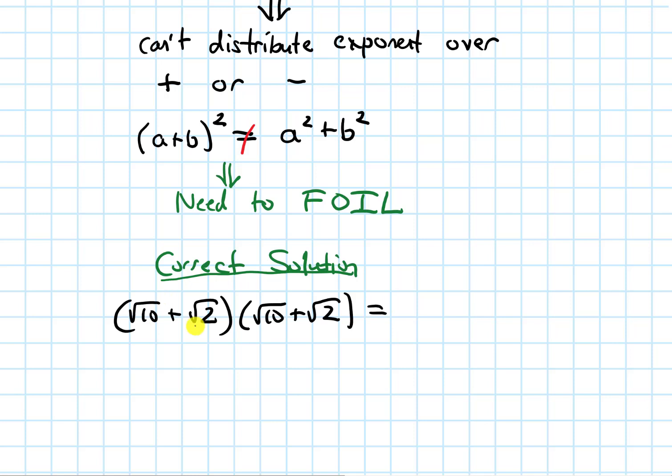When we do that, we'll get root 10 times the root 10, so root 10 squared. We'll also have to multiply that by this root 2, and then multiply this root 2 by that root 10, and then this root 2 by that root 2. So it'll give us 2 root 2 times root 10, and then from multiplying the last two terms together, I'll get a plus root 2 squared.